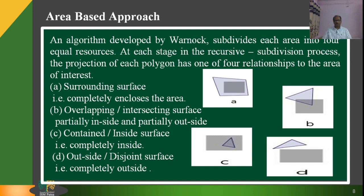You can see on the screen four figures A, B, C, and D. Figure A shows the image which is within the surrounding surface. In figure B, the surface is overlapping — partially inside and partially outside. In figure C, the entire surface is inside the range. And in figure D, the entire surface is completely outside the range.